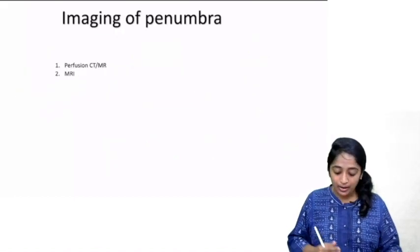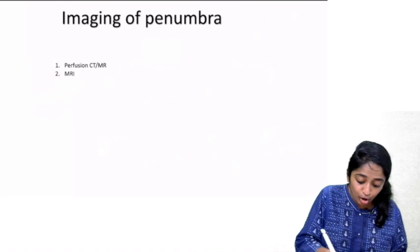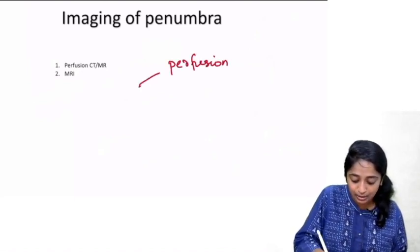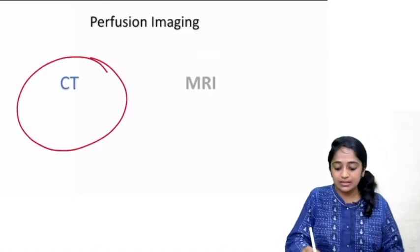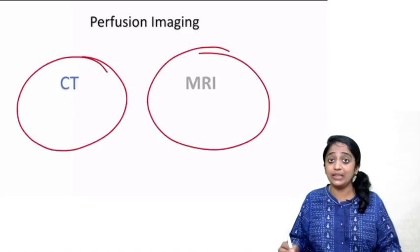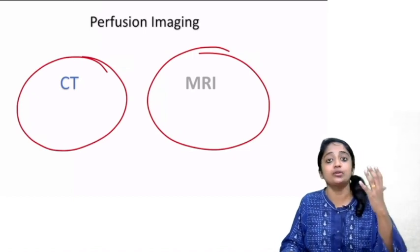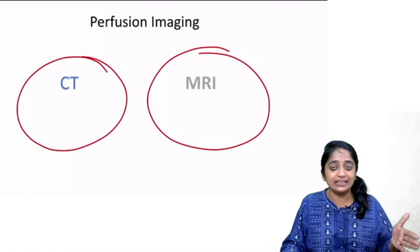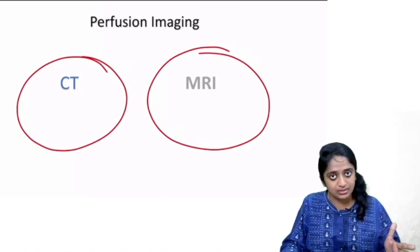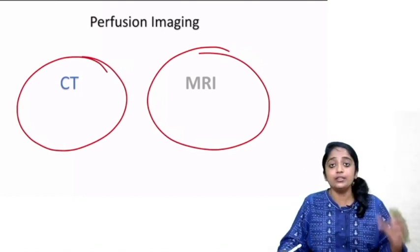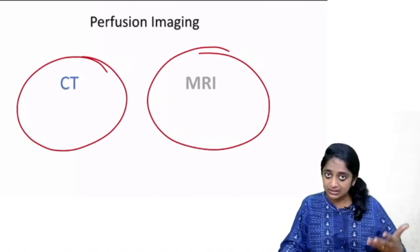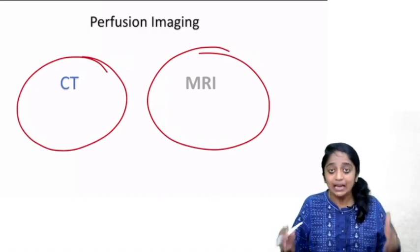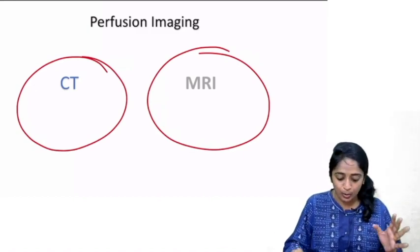Coming to imaging of penumbra: what techniques do we have? We have perfusion imaging — either CT perfusion or MR perfusion. In acute infarct managed with CT, you proceed with plain CT, CT angiogram, and then develop a perfusion map — CT perfusion. If going straight to MRI, you can acquire MR perfusion mapping as well. The interpretation is slightly different; we shall see them one by one.